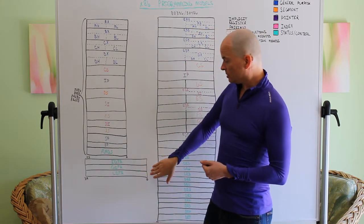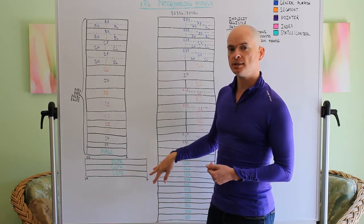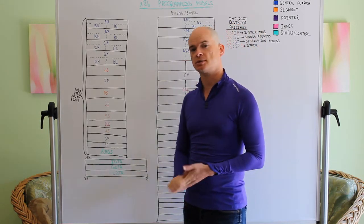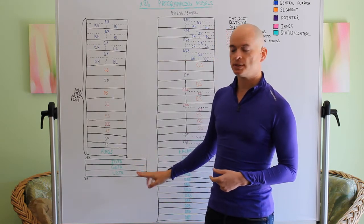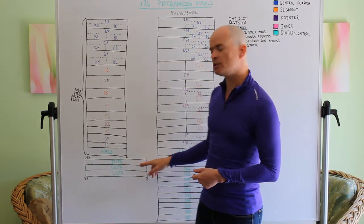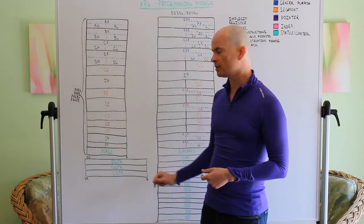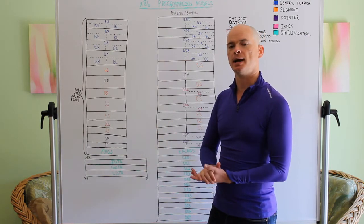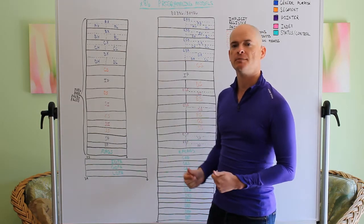With the 286, these three registers were introduced down here. They're not directly accessible by the programmer, you actually have to use special instructions to load and store them. We have the interrupt descriptor table register, it's a pointer to a place in memory that the interrupt descriptor table is located at. We don't need to know what the interrupt descriptor table is yet, but just know that this is a pointer register, it points to somewhere in memory.